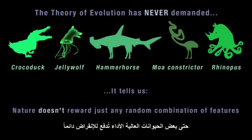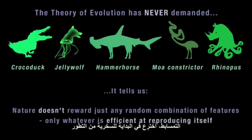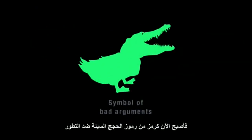Nature doesn't reward just any random combination of features. Even highly specialised animals are being driven to extinction all the time. Nature rewards only whatever is efficient at reproducing itself. The Crocoduck, invented to ridicule evolution, has instead become the symbol of bad arguments against evolution.